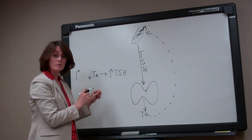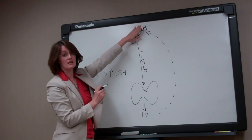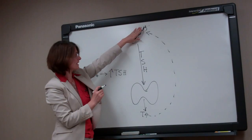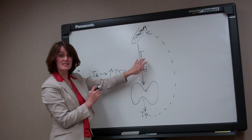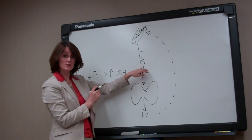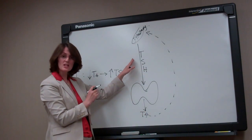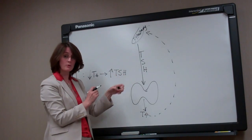The second situation where we can get hypothyroidism is if your pituitary gland itself is sick. If your pituitary gland itself is sick, it isn't going to make the TSH, and so even a healthy thyroid gland can't respond because it's not being told what to do, and so you have a low T4 level. That's much less common. We call that secondary hypothyroidism.